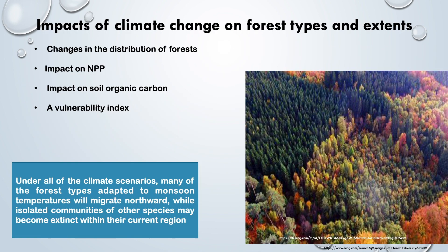Impact of climate change on forest type and extent includes changes in distribution of forests, impact on net primary productivity, impact on soil organic carbon, and vulnerability in nets. Under all climatic scenarios, many forest types adapted to monsoon temperatures will migrate northward, while isolated communities of other species may become extinct within their current region.